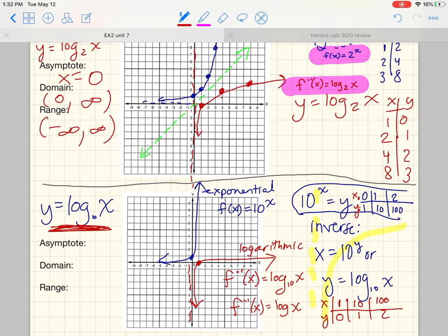Can you fill in the asymptotes for the log graph? Okay, let's try that. The asymptotes for the log graph. The asymptote is a vertical line. So that's the y-axis, x equals 0.